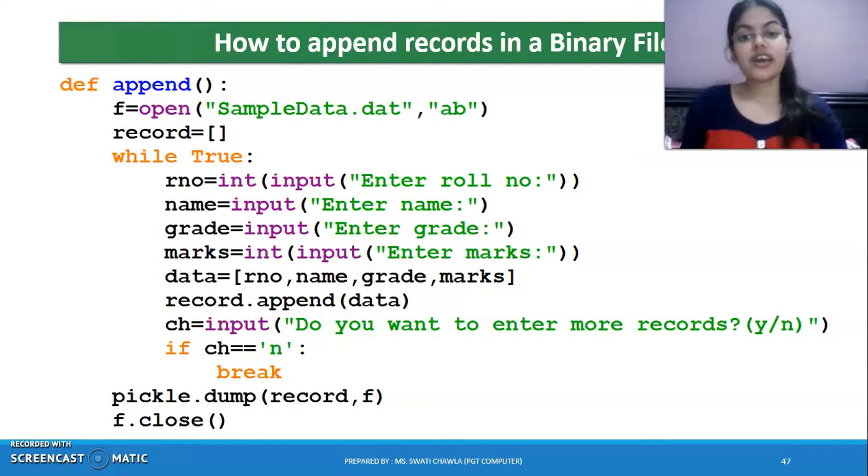In read mode, if I want to read data from a file, it is mandatory that the file exists. Otherwise, it will show an error. But in writing case, if the file does not exist, it will create a new file. Same with append mode also. But write mode and append mode - what's the difference?